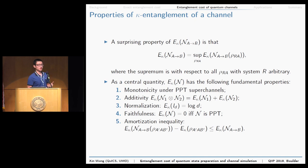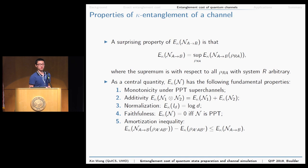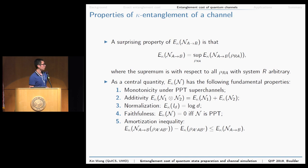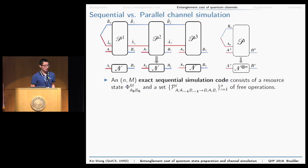The kappa entanglement of a channel has many applications and nice properties. It is perfectly connected to the state version: it equals the maximum kappa entanglement that can be generated via the noisy channel. Moreover, it is monotone under PPT superchannels, and it satisfies an amortization equality: the amortized entanglement difference before and after implementing the channel is upper bounded by the kappa entanglement of the channel.